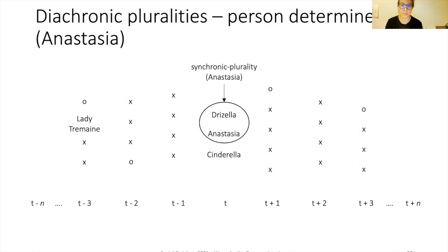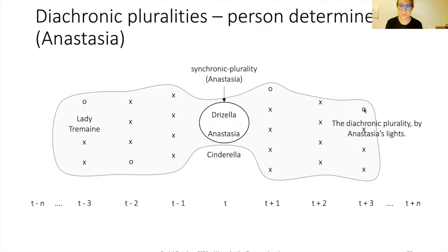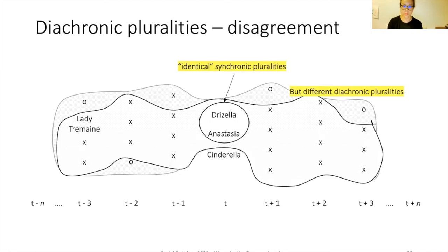The diachronic plurality as picked out by Drisella based on her own desires includes all person stages she considers to have the desired features she cares about given her utterance. Since this is person-determined, only Drisella's desires matter in determining the diachronic plurality. Let's see how disagreement arises: Anastasia might pick out the same synchronic plurality as Drisella, but include person stages that Drisella excluded, making Anastasia's diachronic plurality more inclusive.